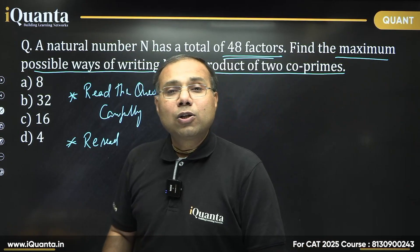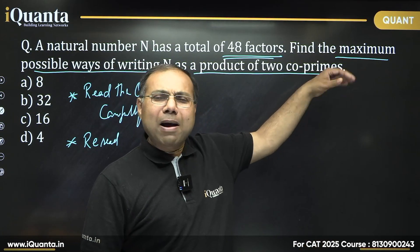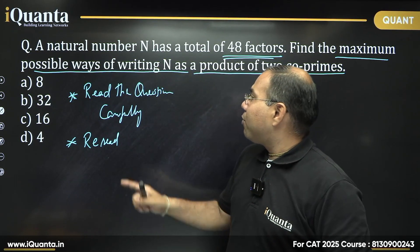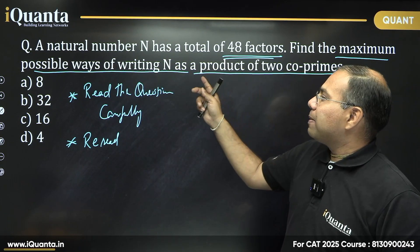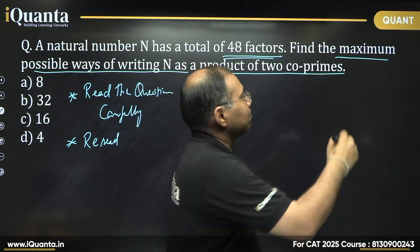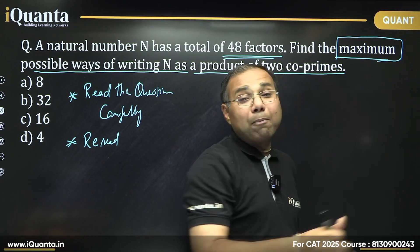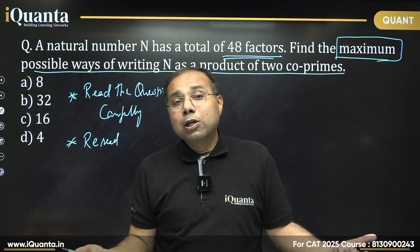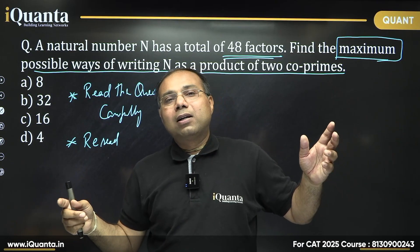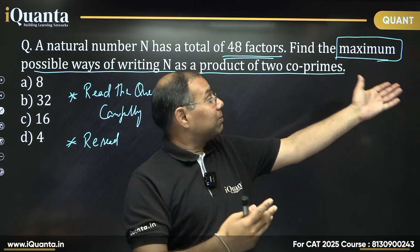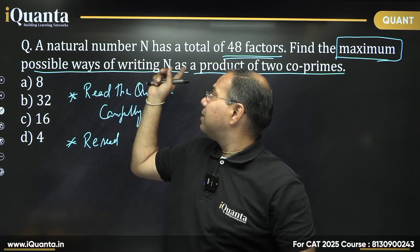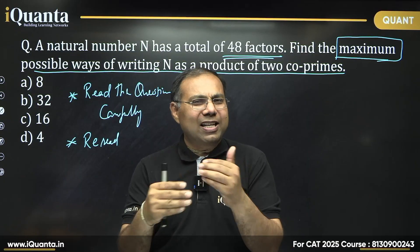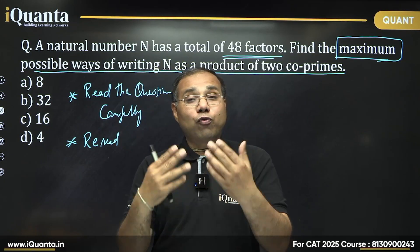Let's look at the 'maximum' part later. First, if we have a fixed number, we want to write it as a product of two co-primes — how many possible ways are there? The number is not fixed; there are many numbers which have 48 factors. Among those infinitely many numbers, we want the maximum possible ways to write such a number as a product of two co-primes. This is a multi-layer question.